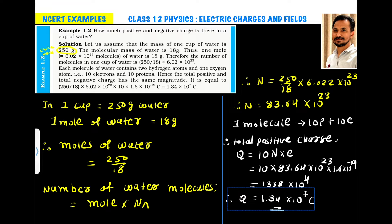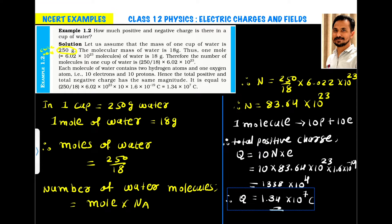Example 1.2: How much positive and negative charge is there in a cup of water? In this question, it is assumed that a cup of water contains 250 grams of water. This is the NCERT assumption, though in some exams the mass may differ. The question asks how much positive and negative charge is present.